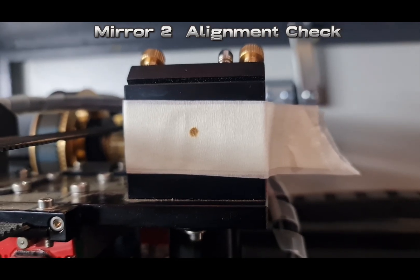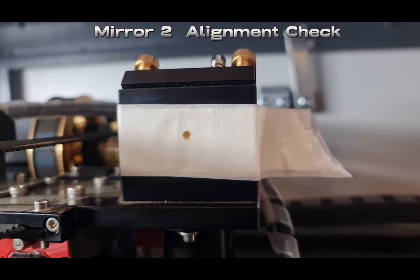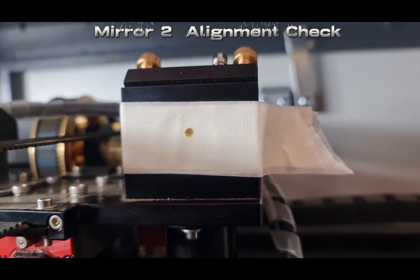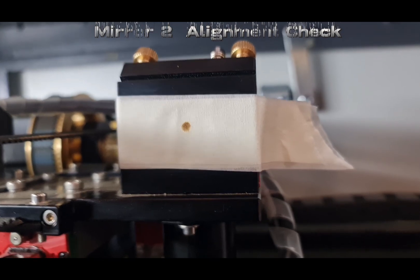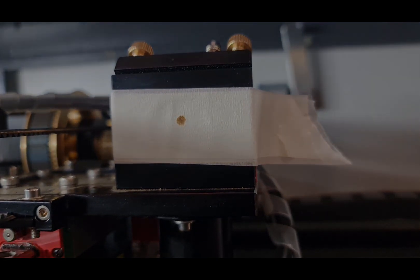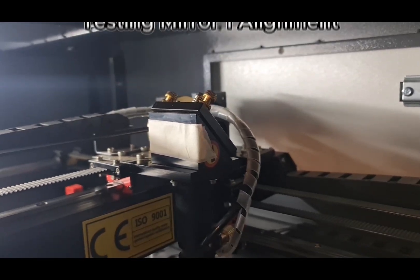A little bit higher is good. If it's center you haven't got a lot of adjustment on mirror three to send it down, and if it's lower you'll need to adjust the tube up a little bit to hit higher at mirror one.